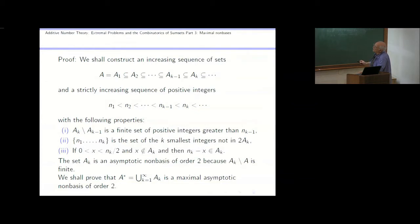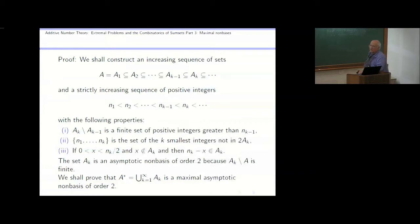Each of these sum sets is missing infinitely many numbers, and there are certainly going to be at least k numbers not in the sum set. Finally, if you have a number X less than N_k over 2 and it's not in the set A_k, then its complement with respect to N_k is in the set. The claim is that if I take the union of these non-bases, I get a maximal asymptotic non-basis.